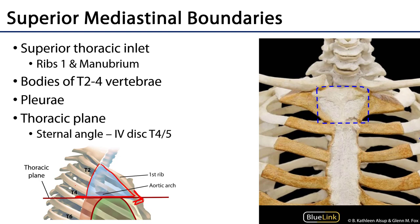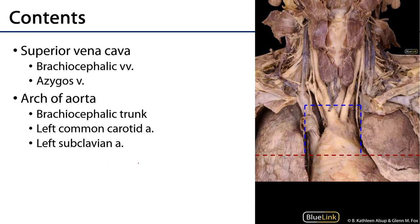We can see the rough borders of the superior mediastinum here, but keep in mind this is a little deceptive because the manubrium is set back at an angle, so there's more of a wedge shape to it than a cube. Let's move from anterior or superficial to posterior or deep and take a look at the contents.